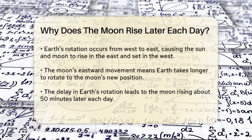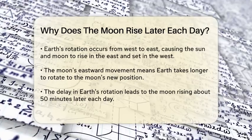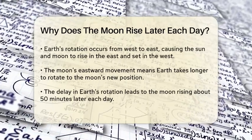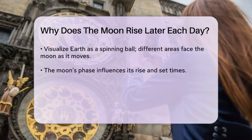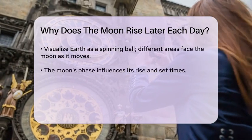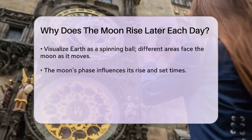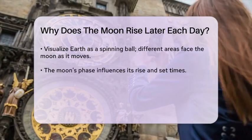To break it down further, imagine the Earth as a big ball spinning around its axis. As it spins, different parts of the Earth face towards or away from the moon. Since the moon is moving eastward, the Earth has to rotate a bit more to bring the same part of the planet back to face the moon again.